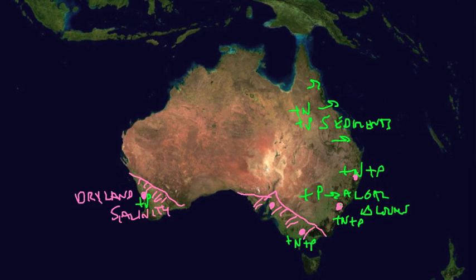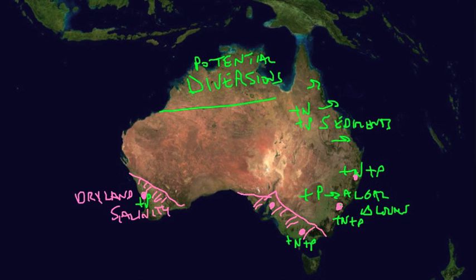So, we're seeing all kinds of current issues. In addition, potential diversions from the tropical rivers of the north are being proposed. These diversions could be for agriculture or drinking water, but they could have large ecological impacts as well. These are the overview of this big dry continent of Australia and some of the issues associated with the water cycle.